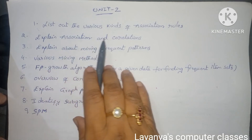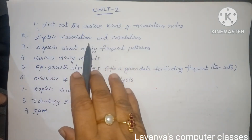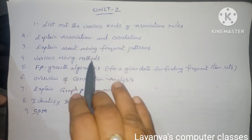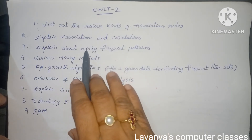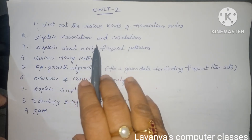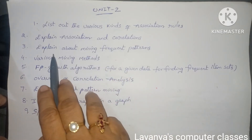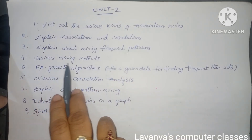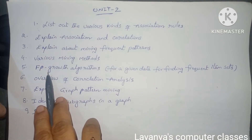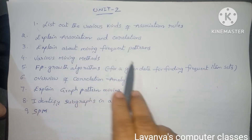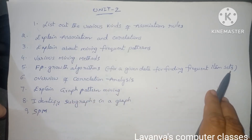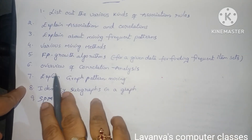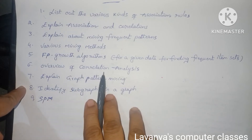The second question is explain association and correlation, or sometimes they ask the difference between association and correlation, or define association — in any manner they ask the question, so just read the concept and it will be easy to attempt the answers. Next, explain about mining frequent patterns — a very very important question. Then, explain various mining methods. Next, FP growth algorithm for a given data for finding frequent item sets, asked in examination questions as numerical examples. Also explain the overview of correlation analysis.